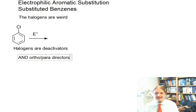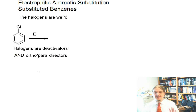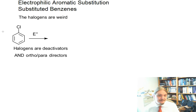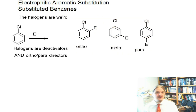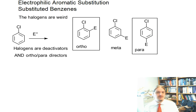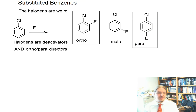The halogens are the reason that the deactivators and activators, ortho-para and meta-director groups, don't have a perfect one-to-one correspondence. What that means is that we have three regiochemical outcomes. The reactions are slower with the halogens, but the halogens still favor ortho and para. So let's talk about what's going on with the halogens.